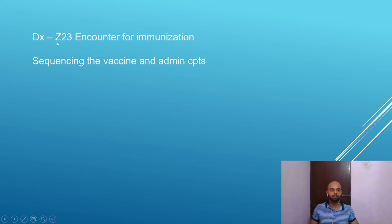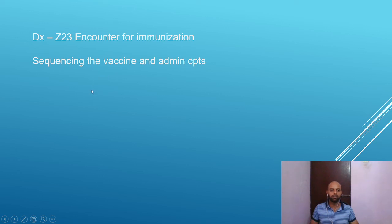Always bill DX Z23 — encounter for immunization — for both the vaccine and administration codes. When it comes to sequencing the vaccine and admin, there is no specific sequencing order. But when you're billing with an E&M visit and other visits, always bill the E&M visit first, then the vaccine and admin codes.